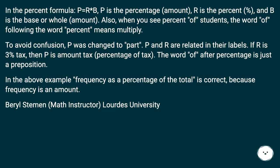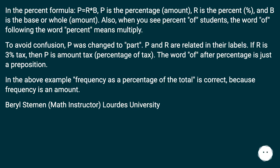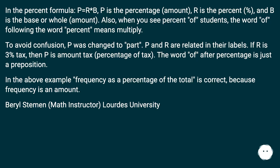In the percent formula p = r × b, p is the percentage amount, r is the percent (percent symbol), and b is the base or whole amount. When you see 'percent of,' the word 'of' following 'percent' means multiply. To avoid confusion, p was changed to 'part.' If r is 3% tax, then p is the amount of tax — percentage of tax. The word 'of' after 'percentage' is just a preposition. So 'frequency as a percentage of the total' is correct, because frequency is an amount.